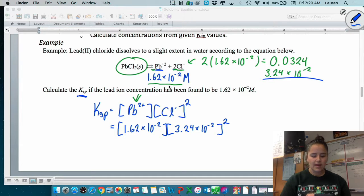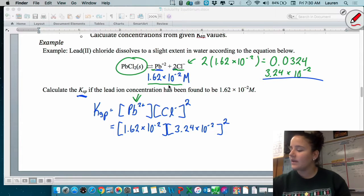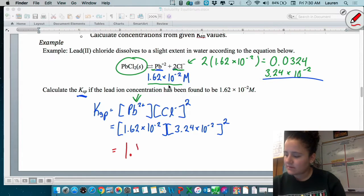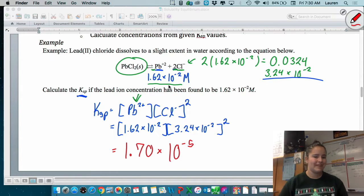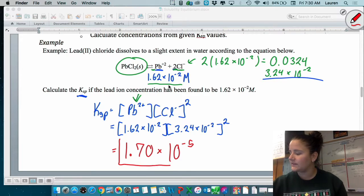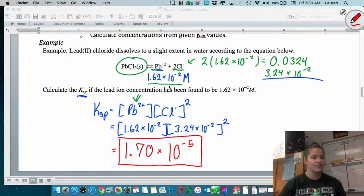And I got, I changed my calculator back into scientific notation mode so I can see it easier. I got 1.70 times 10 to the negative 5. These equilibrium expressions are unitless, so don't put units on them, they don't need them, they don't have them. So it's just the 1.7 times 10 to the negative 5.